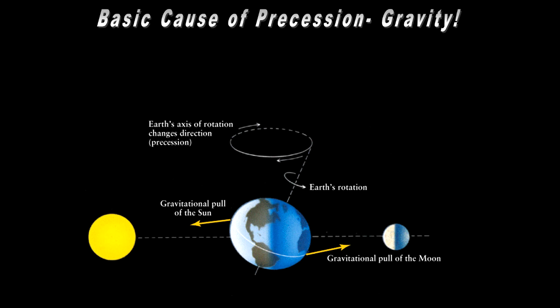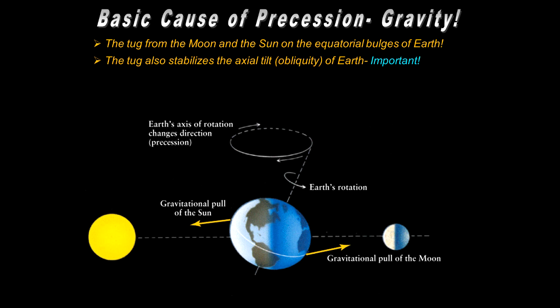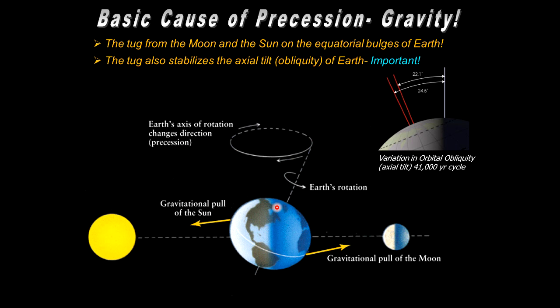Just a little bit on the cause of precession. It has to do with gravity, the tug from the Moon and the Sun on the bulges of Earth. Basically, the Earth as it rotates becomes an oblate spheroid. The equatorial regions are bulged out, so the Moon tugs on this bulge, the Sun tugs on this bulge. It puts a torque on the Earth to try and straighten it out, but the laws of conservation of angular momentum cause it to precess instead.